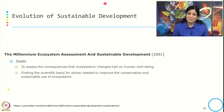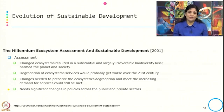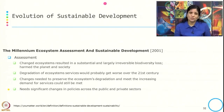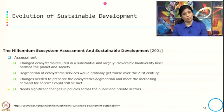Then in 2001, we got the Millennium Ecosystem Assessment. Its goal is to assess the consequences of ecosystem changes on human well-being and to find the scientific basis for action needed to improve the conservation and sustainable use of ecosystems. The assessment addresses ecosystem changes resulting in substantial and largely irreversible biodiversity loss, harm to the planet and society, and degradation of ecosystem services which is likely to get worse. Significant policy changes across both public and private sectors are needed to prevent ecosystem degradation and to restore and conserve ecosystems effectively.